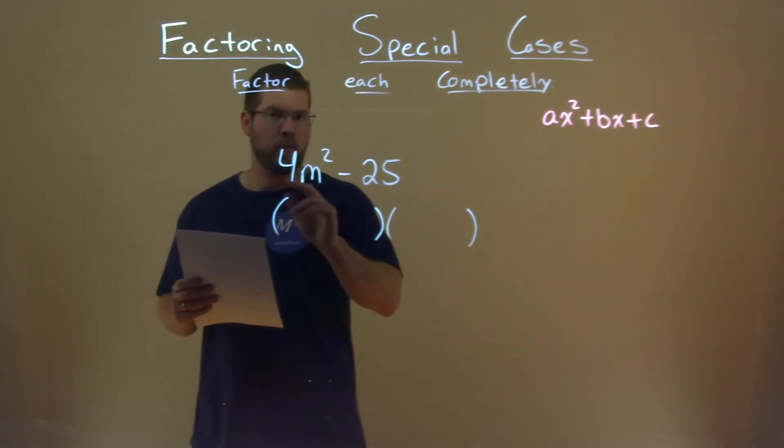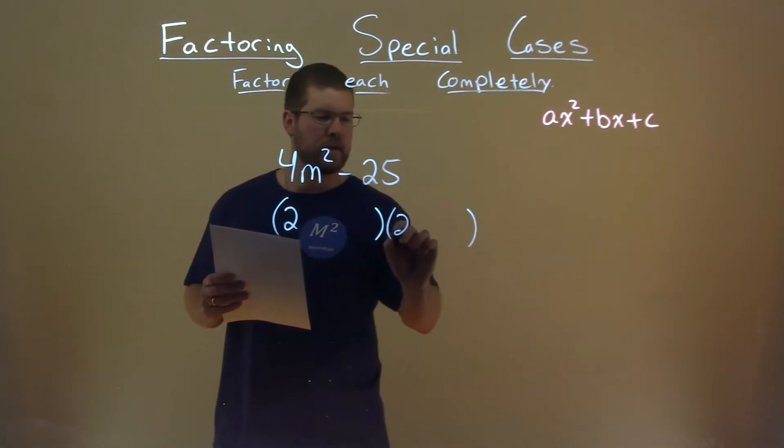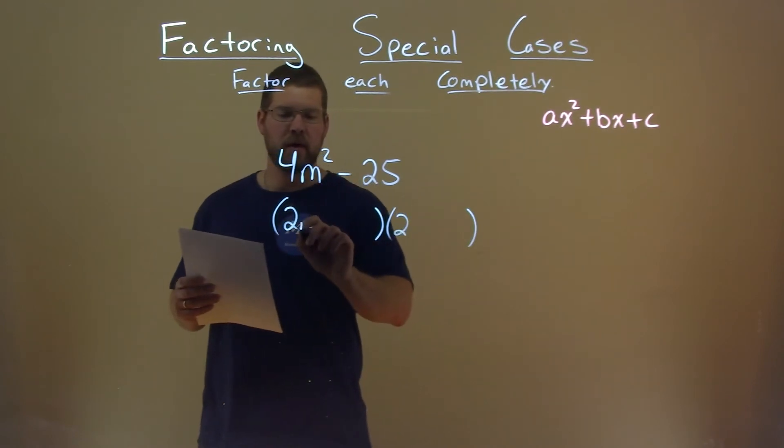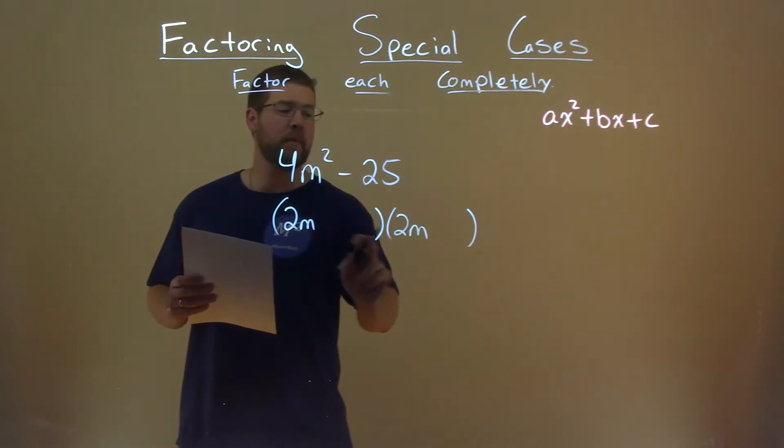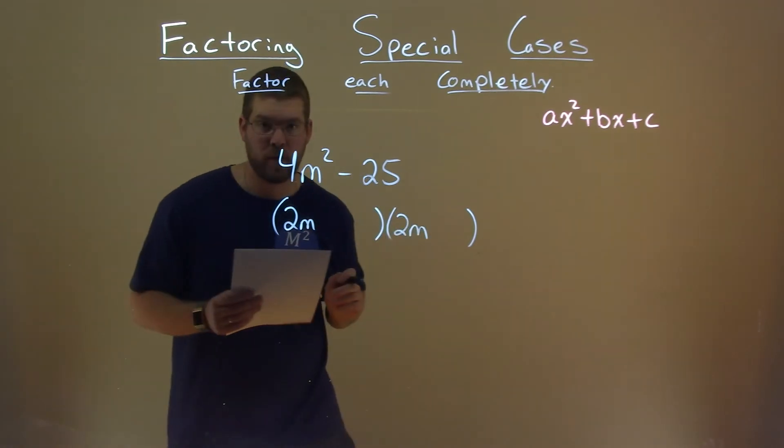We take the square root of 4, which is 2. We have 2 and 2 here. m squared, m, and m. So, 2m times 2m will give us that 4m squared.